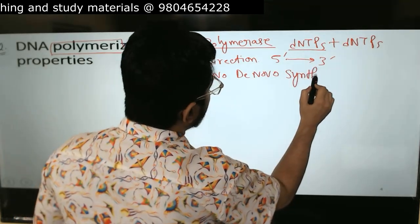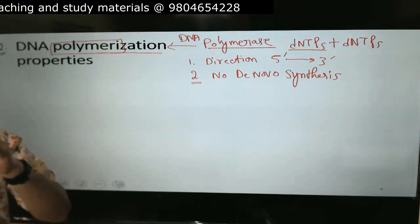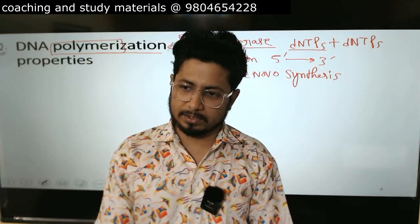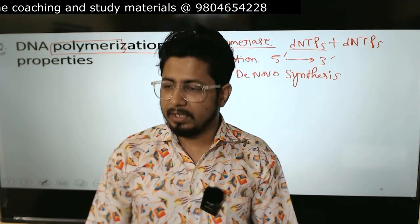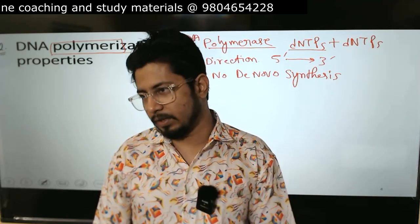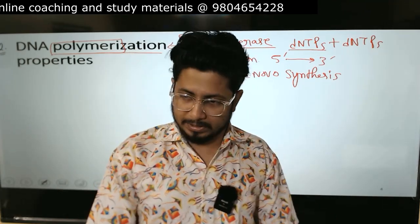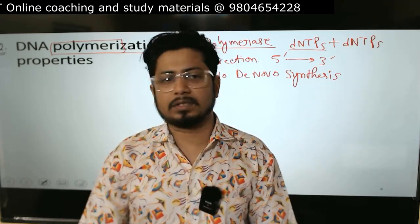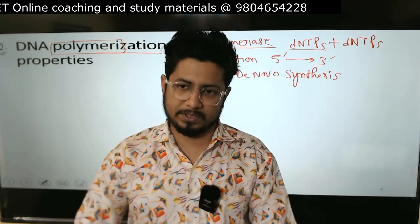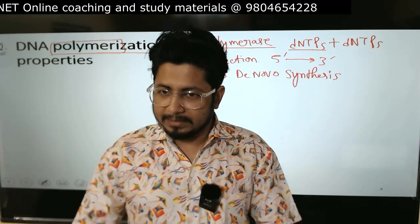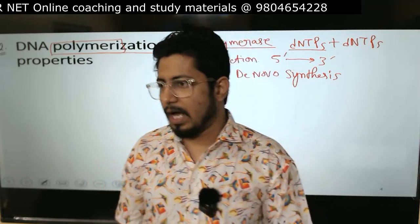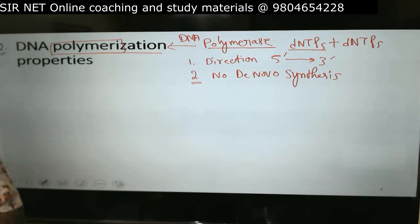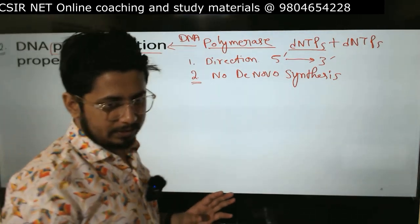No de novo synthesis means the DNA polymerase enzyme cannot start the process of DNA polymerization on its own — it's a big disadvantage. It cannot initiate the process. Although RNA polymerase is a de novo polymerase and can start the polymerization of rNTPs, not dNTPs. That's why RNA polymerase is more versatile.